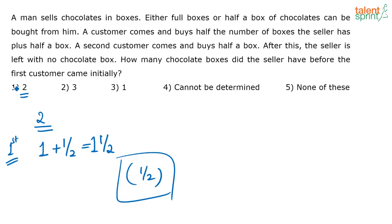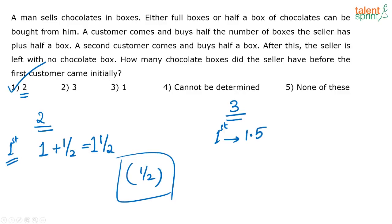How many chocolate boxes did the seller have? Obviously two. Now, a lot of you gave the answer as three. So let us assume three was the case. If three was the case, the first customer comes and buys half the boxes — 1.5 boxes plus another half box — so the first customer is buying two boxes total. That leaves the seller with one box.